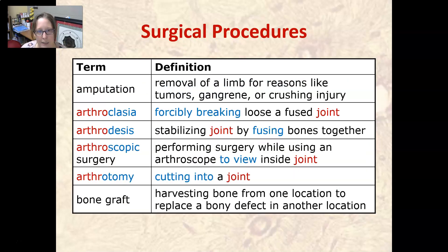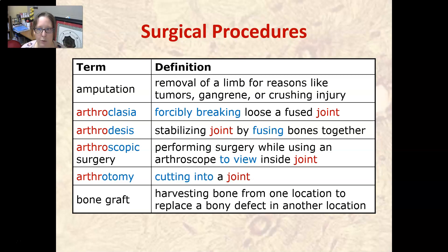An amputation is the removal of a limb for reasons like tumors, gangrene, or a crushing injury. Arthroclasia is forcibly breaking loose a fused joint in order to restore movement.